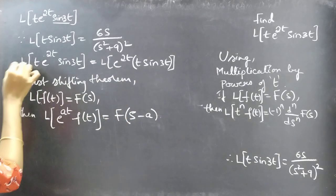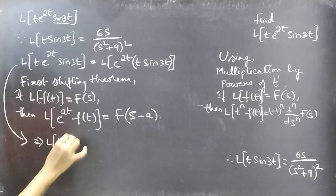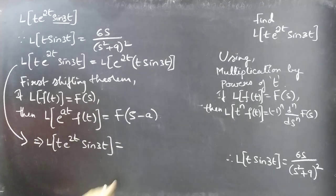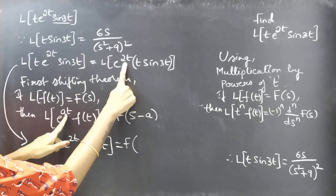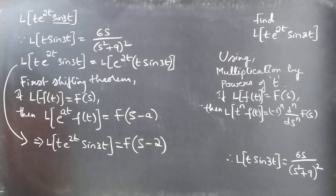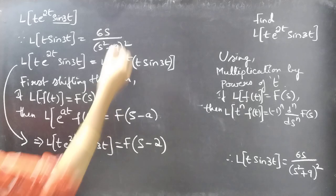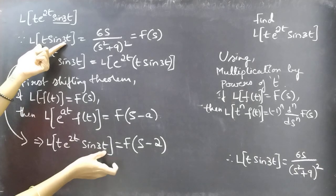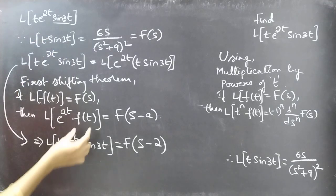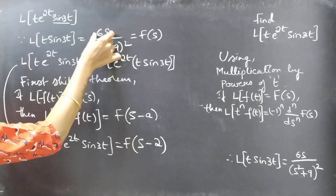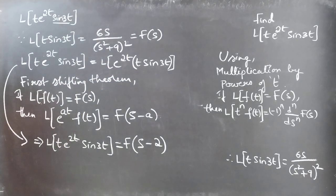By comparing with the first shifting theorem form L{e^(at) · f(t)}, we get L{t·e^(2t)·sin(3t)} = F(s - a). Since a = 2, this becomes F(s - 2). To find F(s - 2), we need F(s), which is the Laplace transform of t·sin(3t), so F(s) = 6s/(s² + 9)².